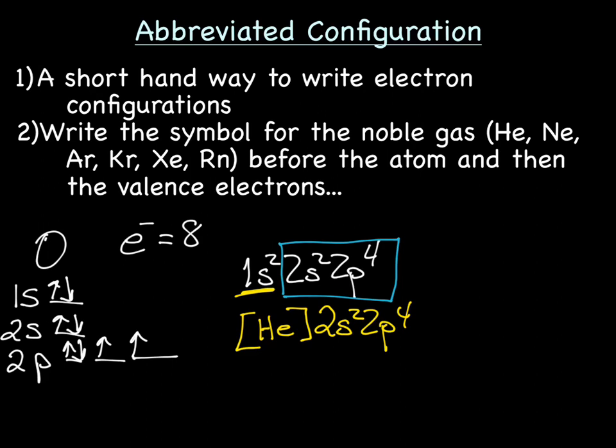So that's how you do abbreviated configuration. Hopefully you now know how to find valence electrons and how to write abbreviated configurations. That's it for today — have a good one.